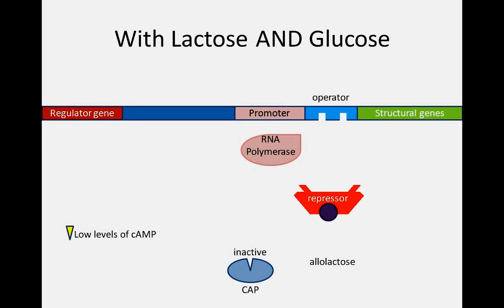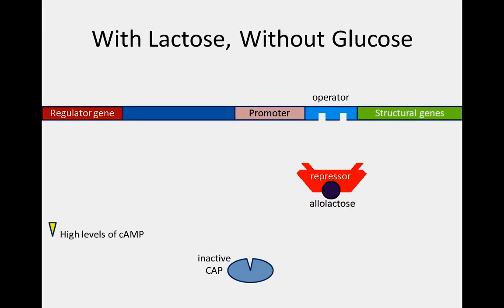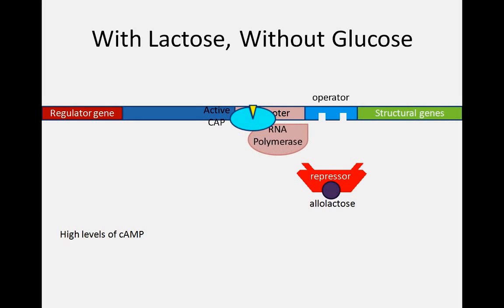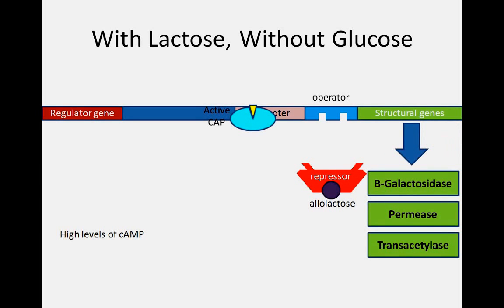Only when levels of glucose are low is cyclic AMP available to bind and activate CAP, which in turn facilitates transcription through enhanced RNA polymerase binding. Therefore, CAP is active and the lac operon is transcribed efficiently only when lactose is present and more favorable energy sources are absent. This mechanism for gene expression control ensures that cells do not waste energy making proteins that will not be used. The operon system enables a prokaryotic cell to tailor its gene expression to the specific needs as dictated by its immediate environment.